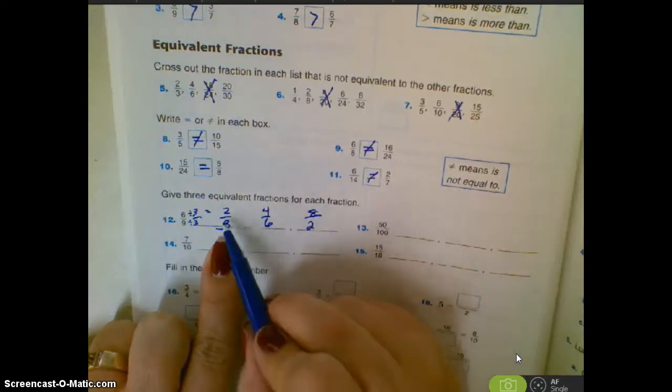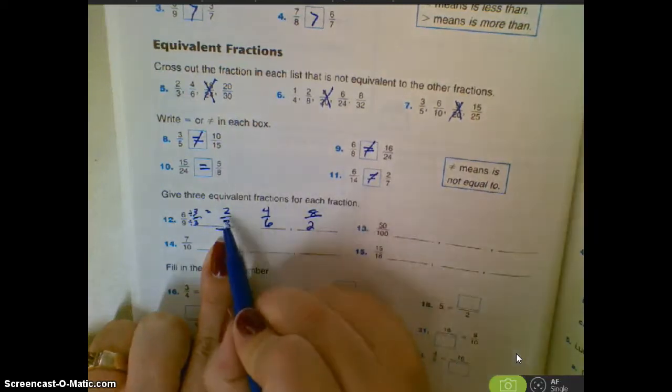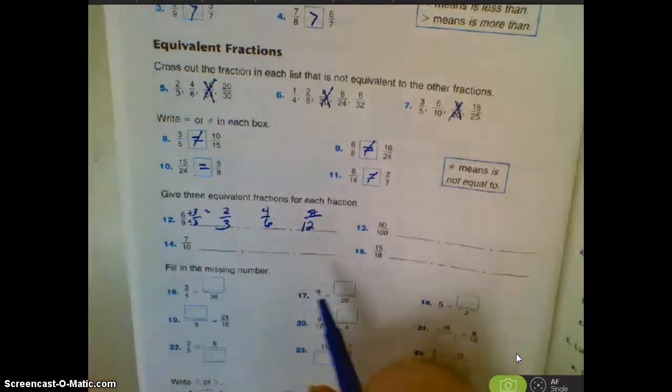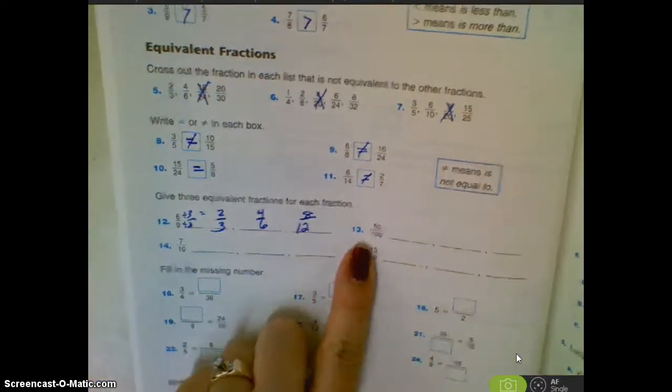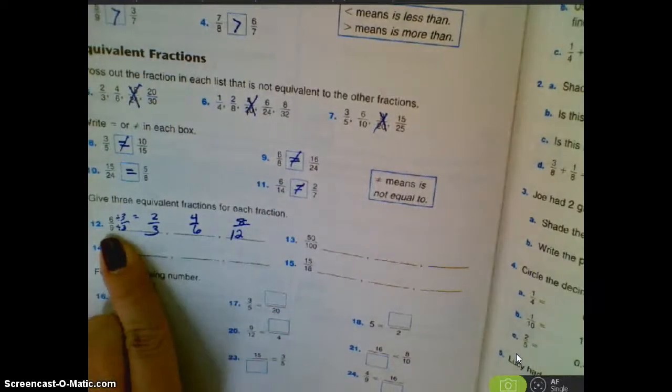Oops, I did it wrong. I'm thinking too much. Two times four is eight. Three times four would be twelve. So eight-twelfths on that one. And yours might be different. They don't all have to be the same. As long as they are equivalent to six-ninths.